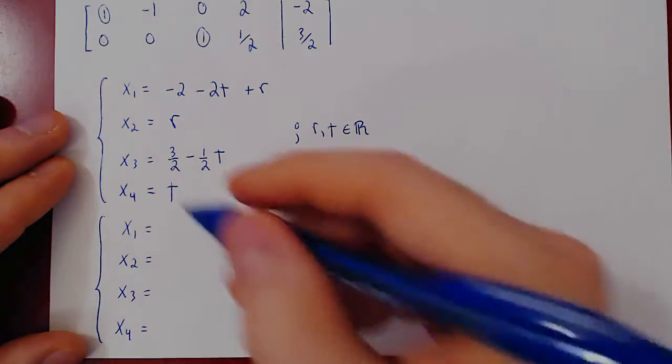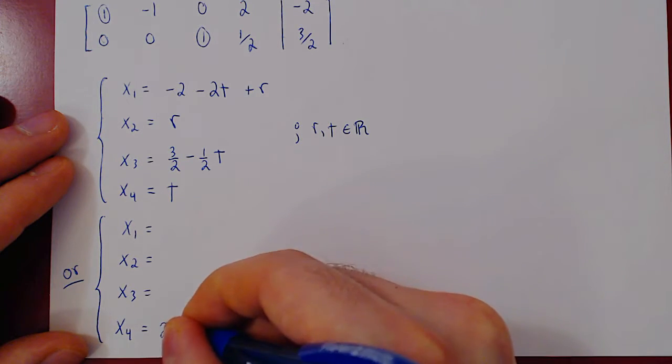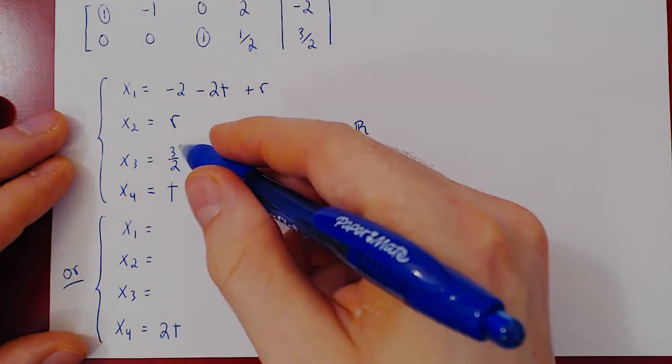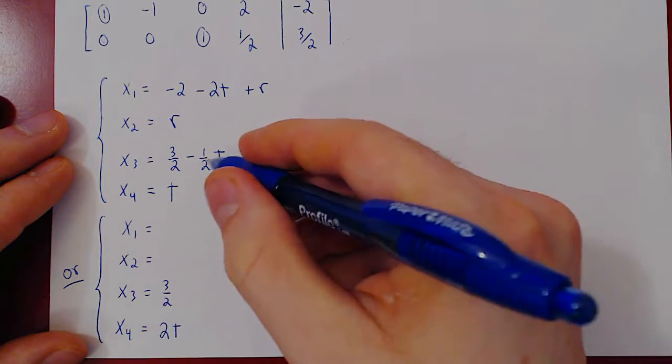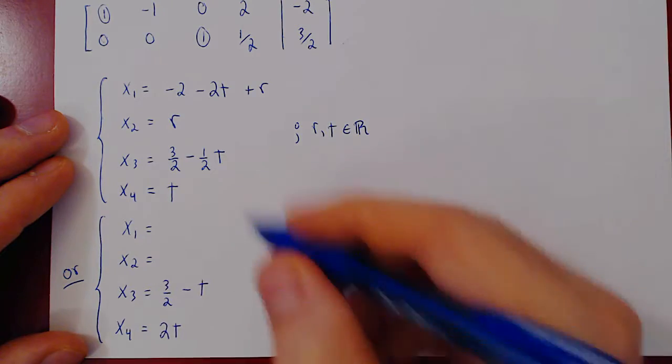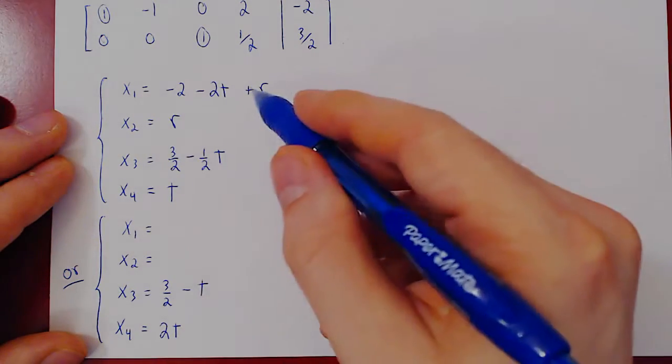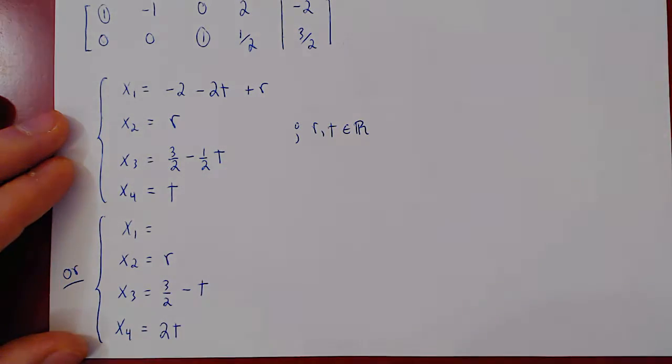So as we've said, replacing t by 2t. x3 will become 3 half, minus 2t over 2, which is t. So 3 half minus t. There's no t here. And we'll leave r alone because r is not multiplied by any fraction. So x2 stays r.